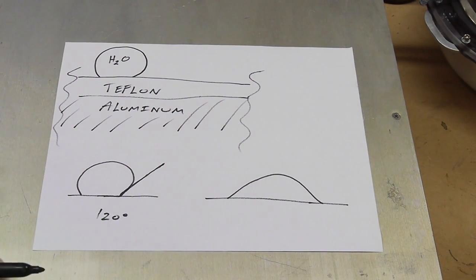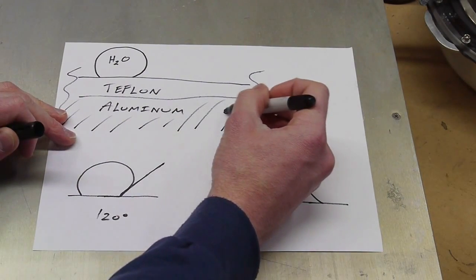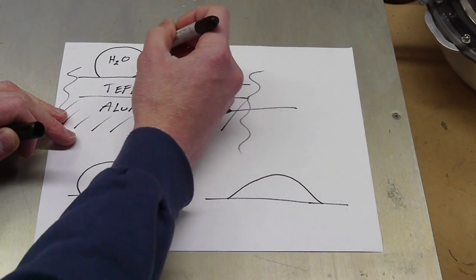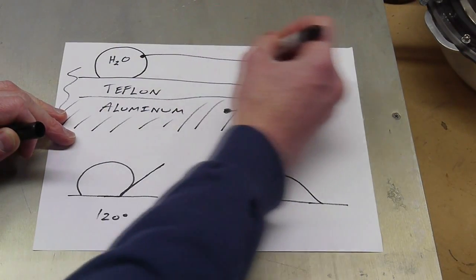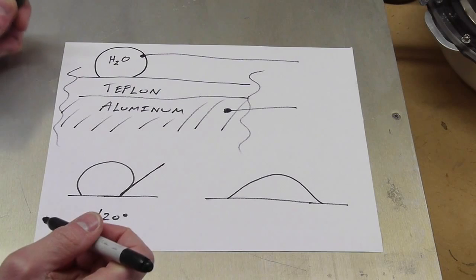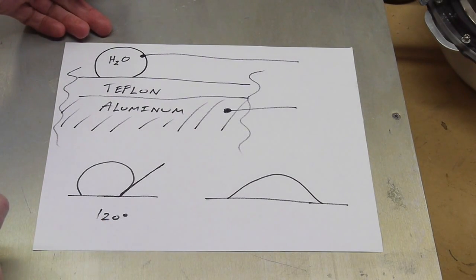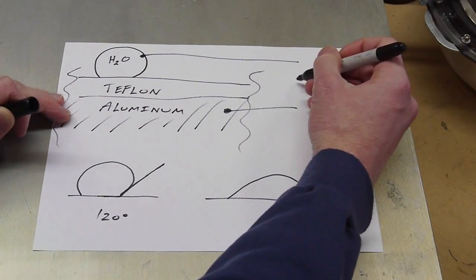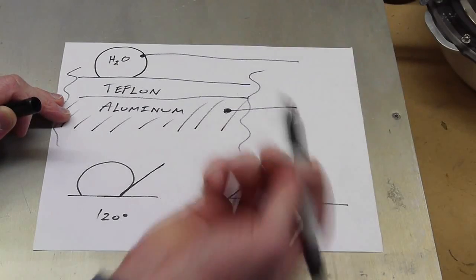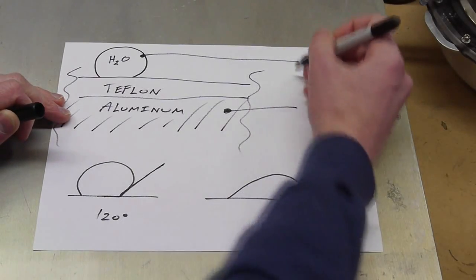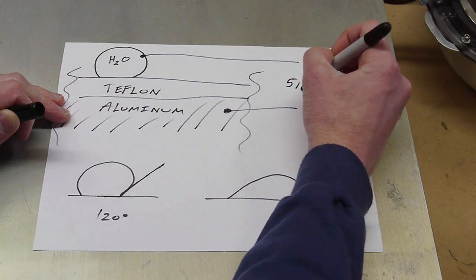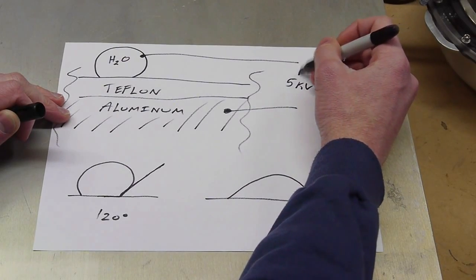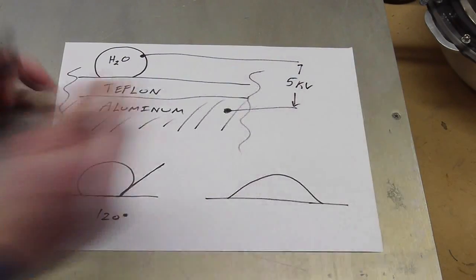Now if we apply power to this system, what we can do is put an electrode on the aluminum and put an electrode in the water. And I should add that the water is conductive. We need to add something to the water to make it conductive. Salt, some electrolyte, any electrolyte. And if we put some voltage on here, let's just for reference, I was using about 5 kilovolts and the reason that the voltage has to be kind of high is because the thickness of the Teflon tape is fairly thick.